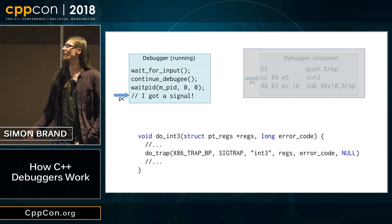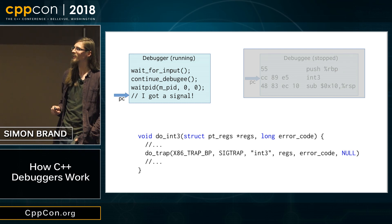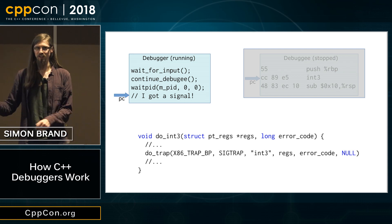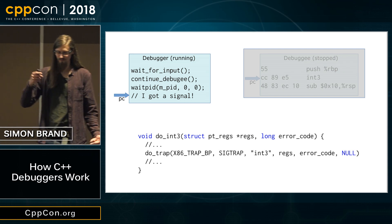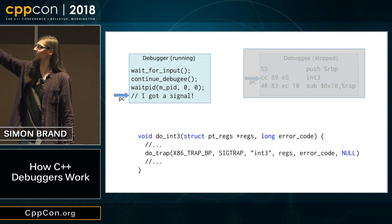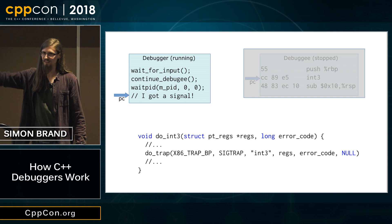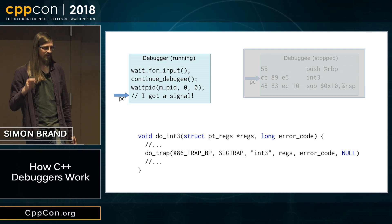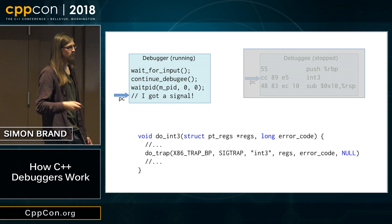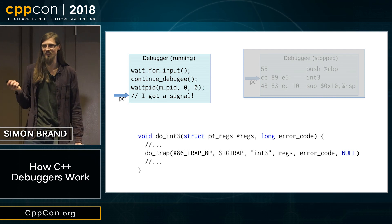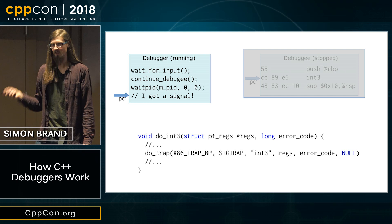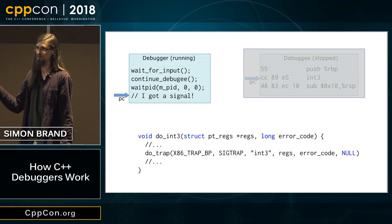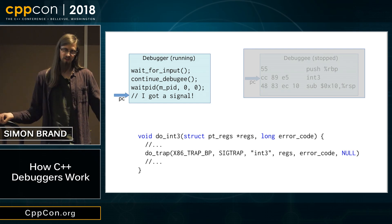A question was raised about the pathological case where the thread scheduler preempts us right after we call 'continue debuggee' but before we call waitpid — could we miss a signal? Honestly, I think it would be possible to miss signals with something like this unless you did extra synchronization. There would be methods of doing this, but the overhead may or may not be worth it.